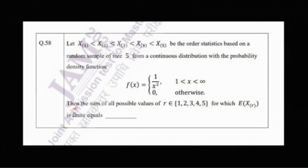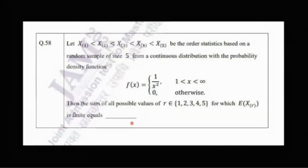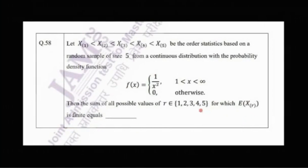Then the sum of all possible values of r in the set {1, 2, 3, 4, 5} for which the expectation of X_(r) is finite equals — so we need to find the values of r for which E[X_(r)] exists and then take the sum of all those r's.